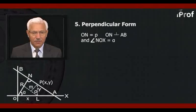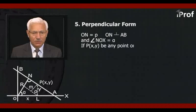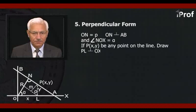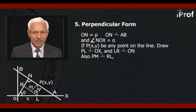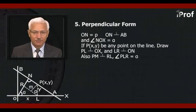If P(x, y) be any point on the line, draw PL perpendicular to Ox, LR perpendicular to ON, and also PM perpendicular to RL. Then clearly, angle PLR equals alpha.